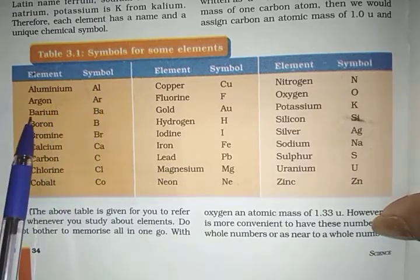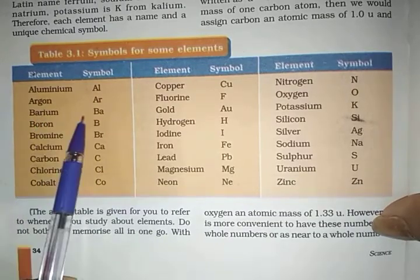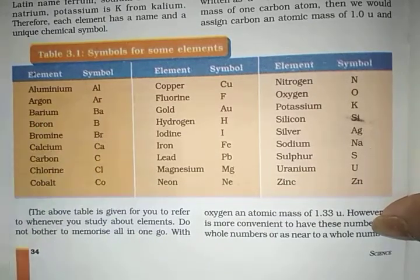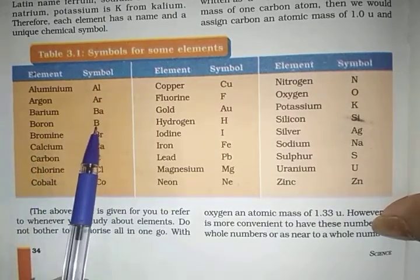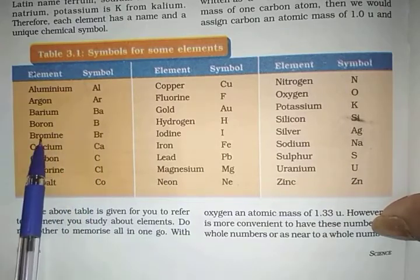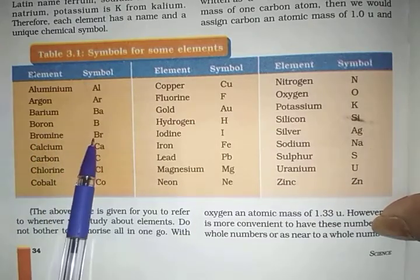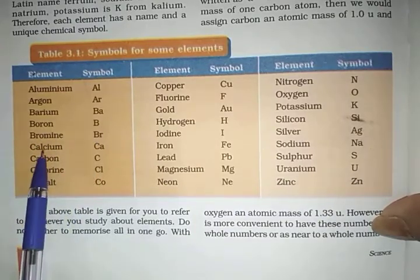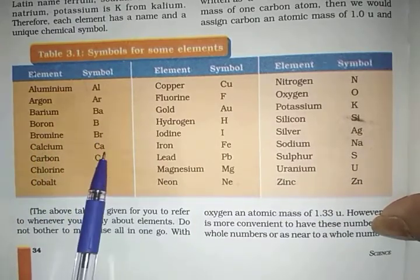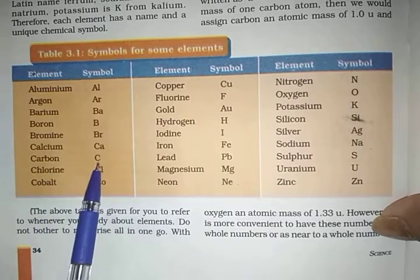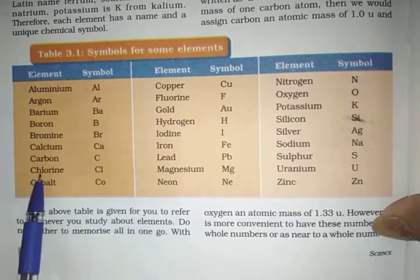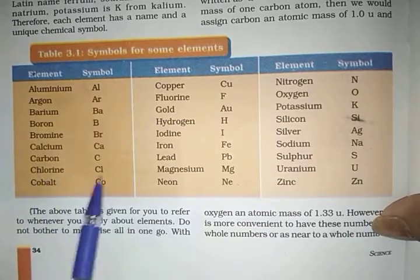Next, Barium — symbol is BA. Boron — symbol is B. Bromine — BR. Calcium — CA. Carbon — C. Chlorine — CL.